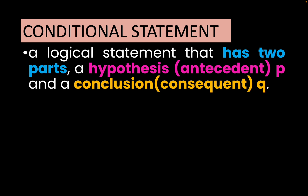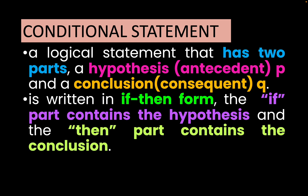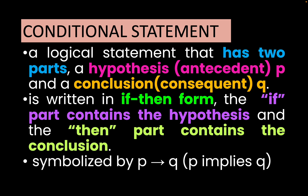Let us first define what a conditional statement is. A logical statement has two parts: a hypothesis, which is the antecedent or the p-statement, and a conclusion or consequent, which is the q-statement. It is written in if-then form. The 'if' part contains the hypothesis, and the 'then' part contains the conclusion. It is symbolized by p implies q.